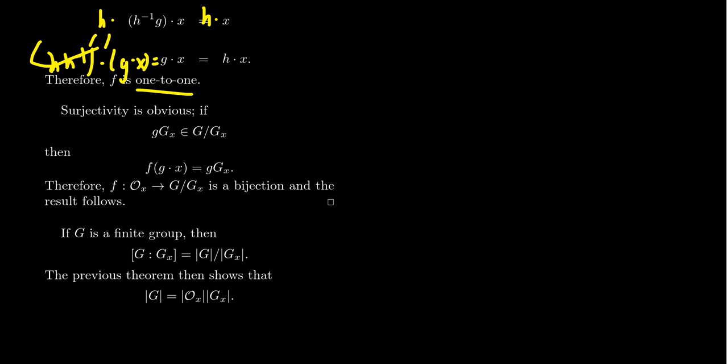Since it's a bijection, this tells us that the cardinality of O_x is equal to the cardinality of G mod G_x which, by definition, is the index. Thus, finishing the proof.